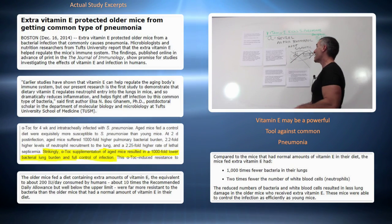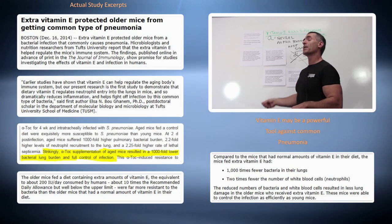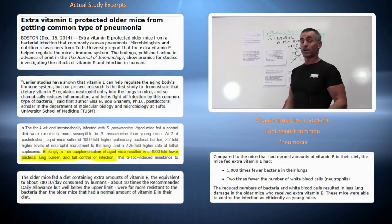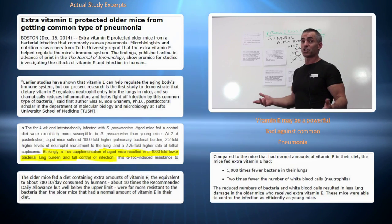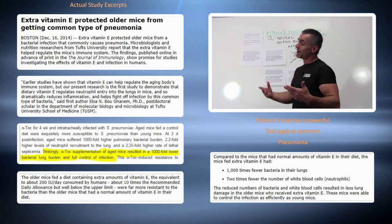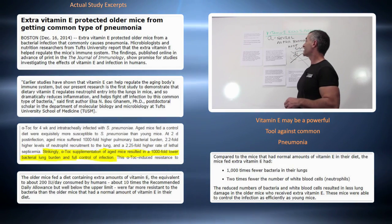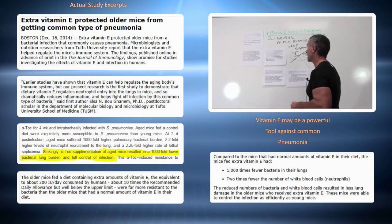And so it dramatically reduces inflammation and helps fight off infection by this common type of bacteria, streptococcus pneumonia. Aged mice were fed a controlled diet, meaning the mice didn't get very much vitamin E, basically like the general population of the United States or the average human. The ones that just got the regular daily requirement of vitamin E were extremely susceptible to pneumonia, much more than young mice.